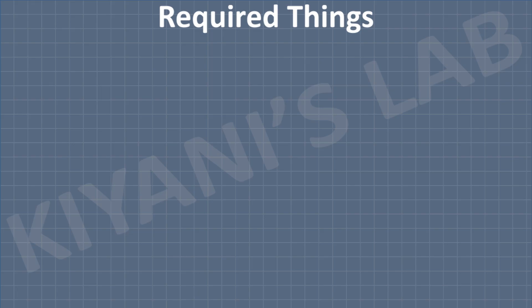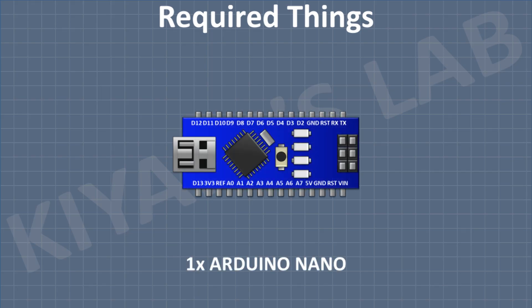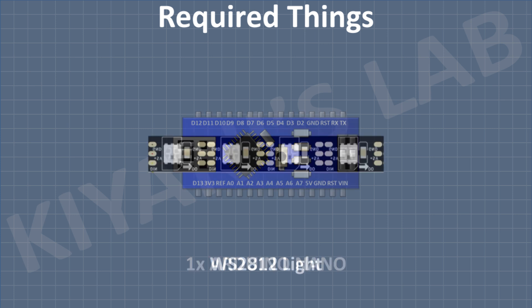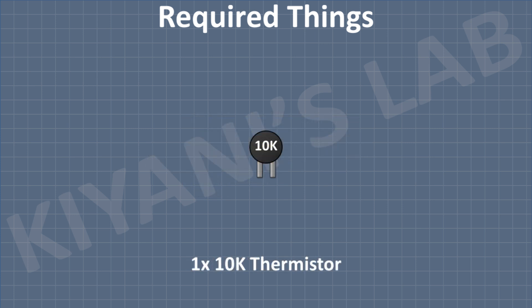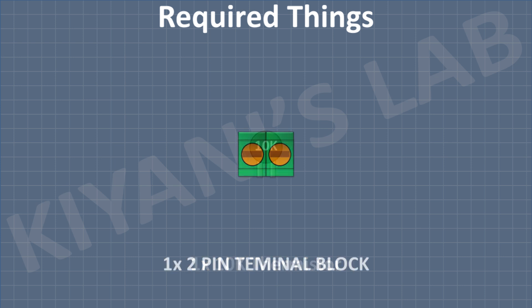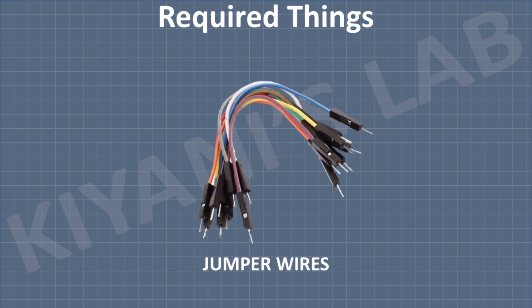So these are all the components we're going to need for this project: Arduino Nano, WS2812 NeoPixel light, 10K thermistor, a 2-pin terminal block, and some jumper wires.